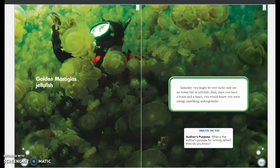This is a Golden Mastisius jellyfish. Someday you might be very lucky and see an ocean full of jellyfish. And since you have a brain and a heart, you would know you are seeing something unforgettable.